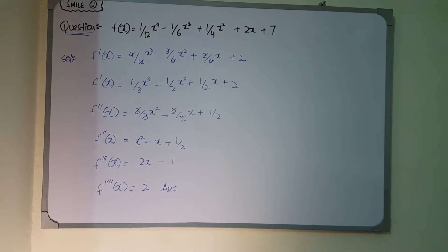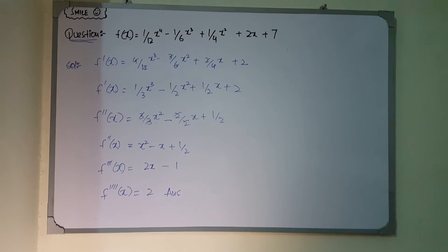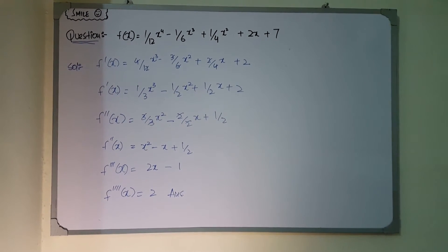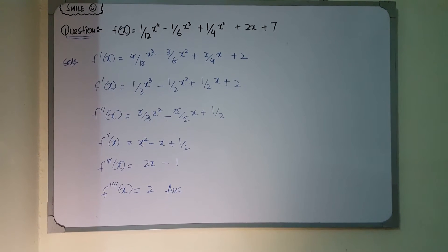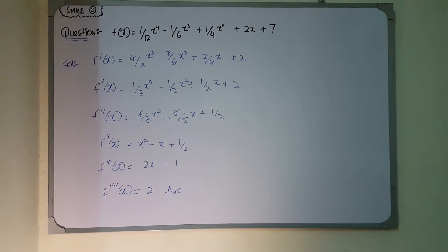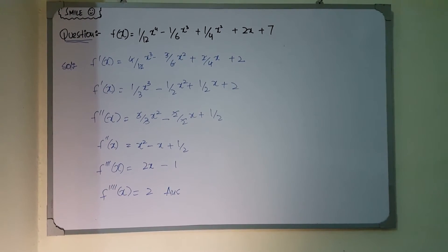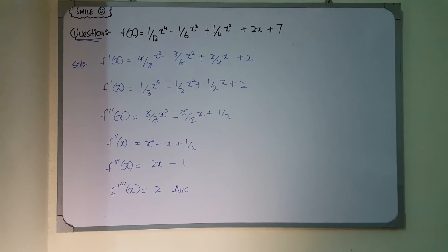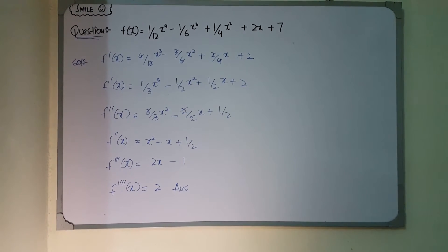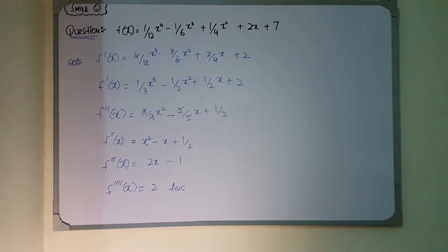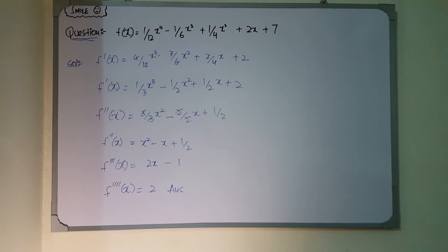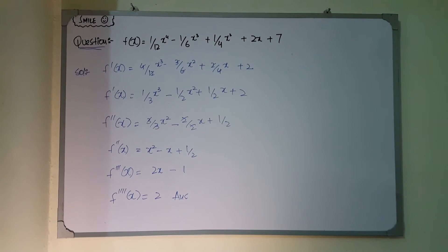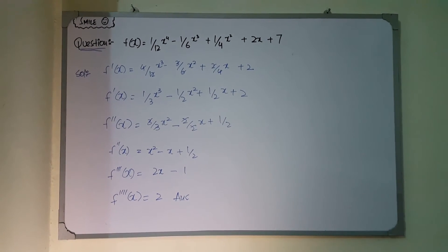Applying the second derivative: the 3 comes down and 1 is subtracted from the power; 2 comes down and 1 is subtracted from the power; and 1/2 x becomes 1/2. After cancellations — threes cancel, twos cancel — the second derivative f″(x) = x² − x + 1/2. Applying the derivative again: 2x gives 2x, −x gives −1, and 1/2 being a constant gives 0, so the third derivative f‴(x) = 2x − 1.